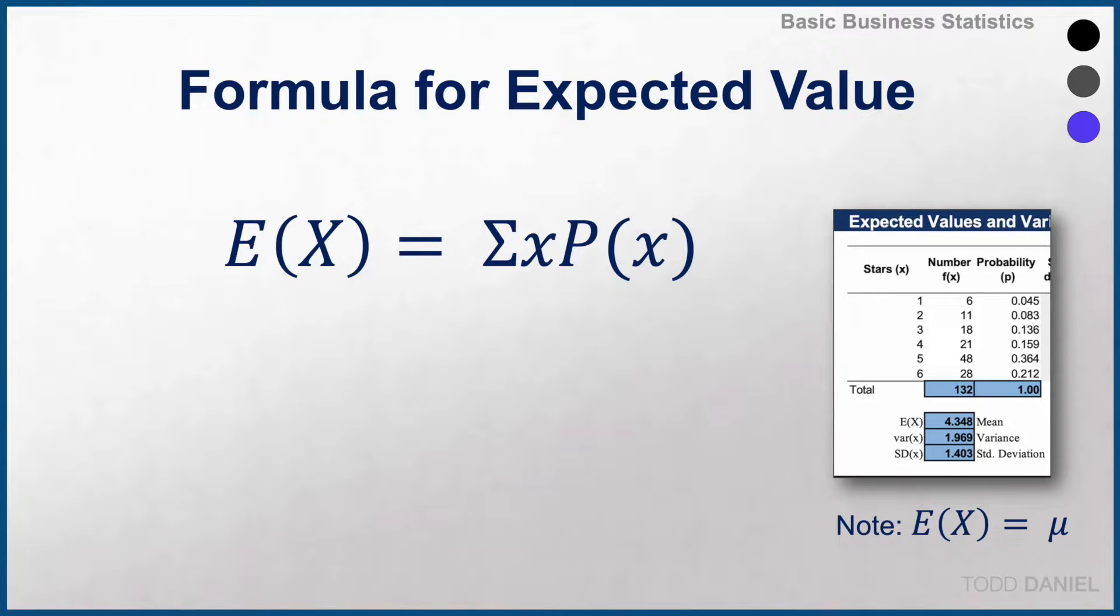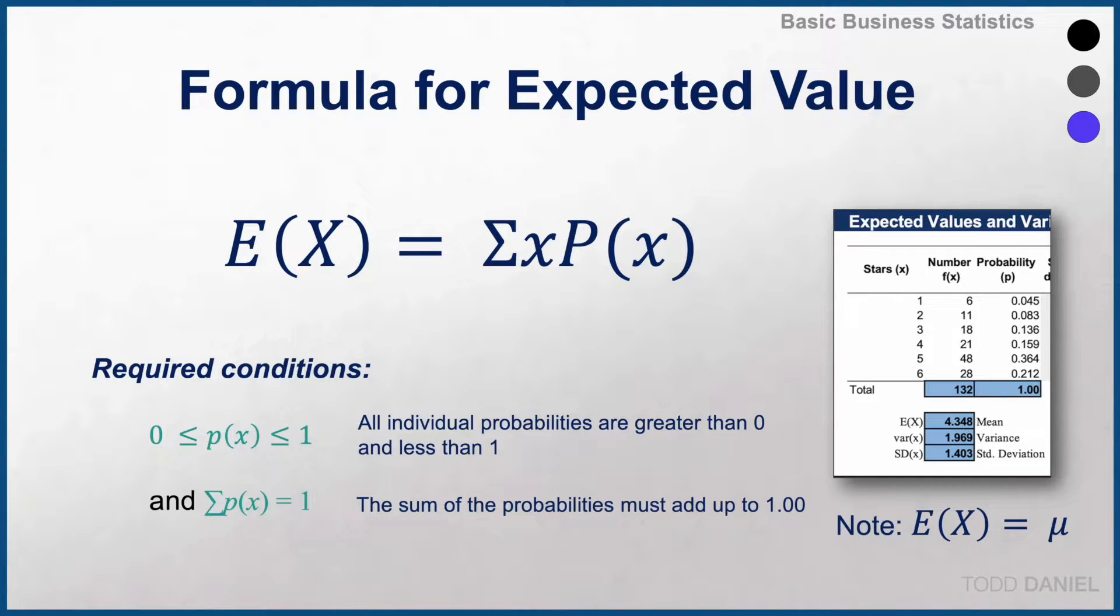The required conditions are that every individual probability must be greater than 0 and less than 1, and the sum of all of the probabilities must add up to 1.